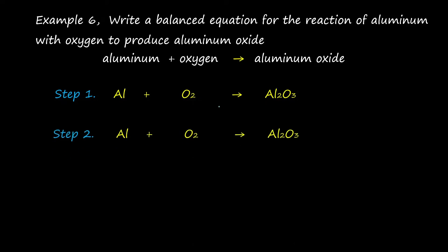The second step is to place the total valence of each element above it. The valence for aluminium is three. For oxygen, one oxygen has a valence of two, and two oxygens have a valence of four. For aluminium in Al₂O₃, there are two aluminium atoms, each with a valence of three, giving a total valence of six. The total valence of oxygen is three times two, which is six also.